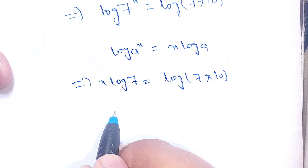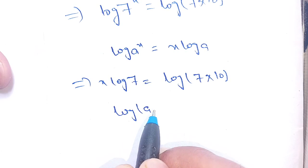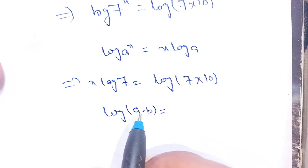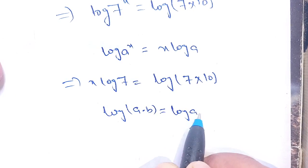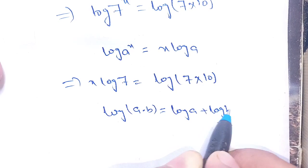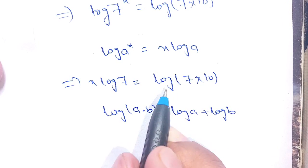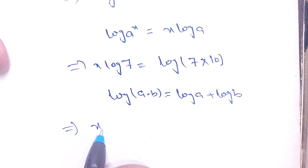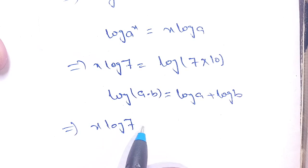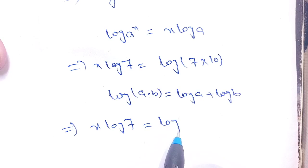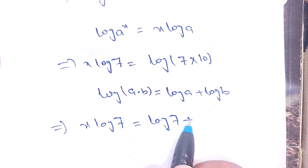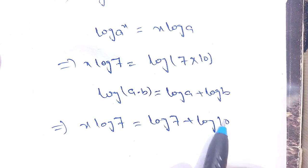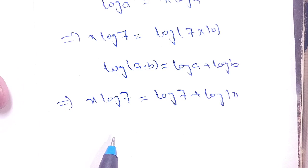Now in the next step, by log(a·b) = log(a) + log(b), and using this identity on the right hand side, we get x·log(7) is equal to log(7) + log(10). Now in the next step,